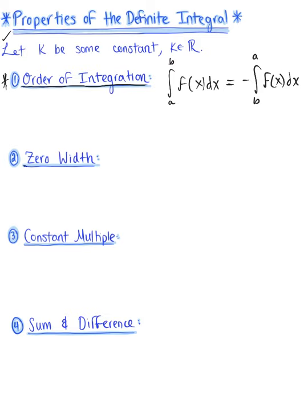Next we have the zero width property — the zero width of an interval. If we have a definite integral from a to a of f of x dx, notice that this interval has the same bounds, meaning our interval has zero width. So the integral is going to be zero every time.